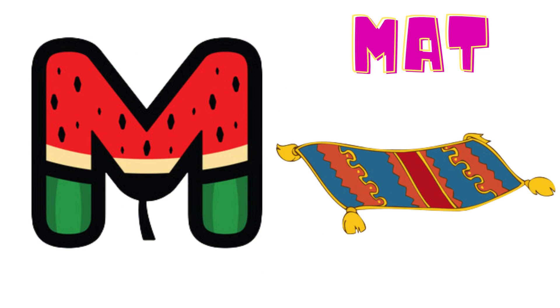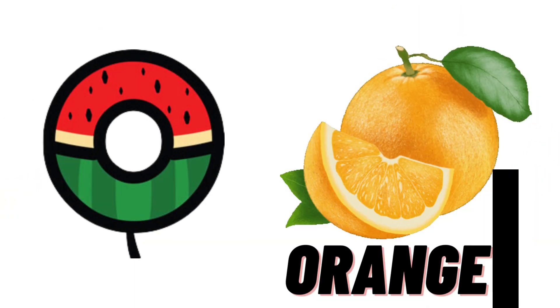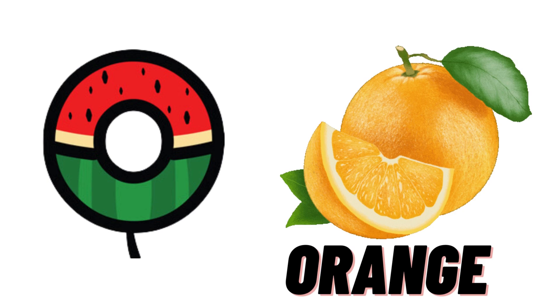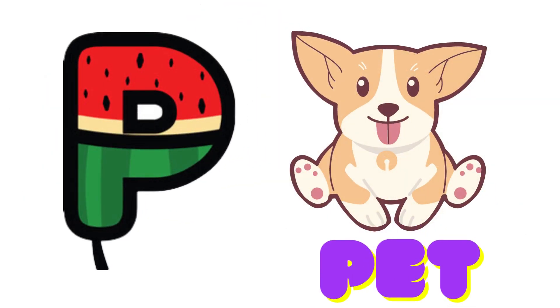M is for Mat, M-M-Mat. N is for Net, N-N-Net. O is for Orange, O-O-Orange. P is for Pet, P-P-Pet.